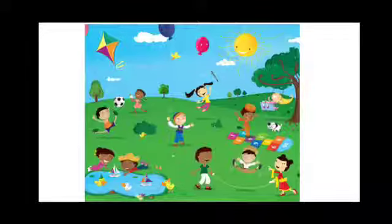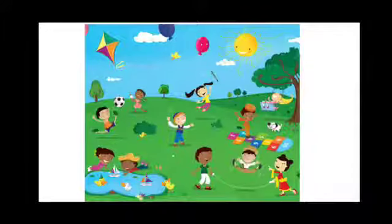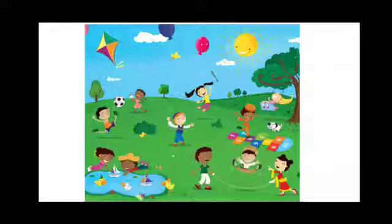So there are 11 children in the picture. We see one swing, one puppy, a hopscotch board, a skipping rope, a small pond with boats and ducks, a ball, a kite, a few balloons, a sun, and trees. Whenever you see a picture you will have to try to list out what are the things in the picture, just like how we listed all these items.